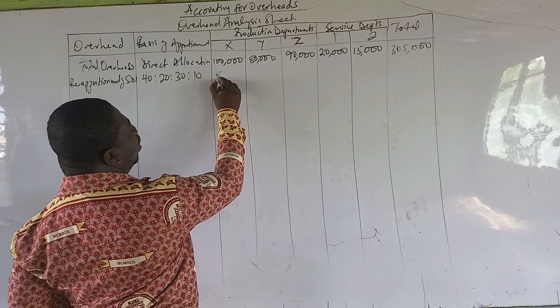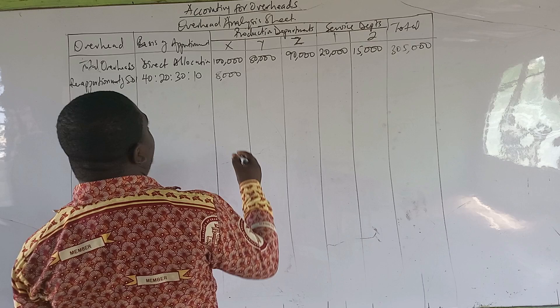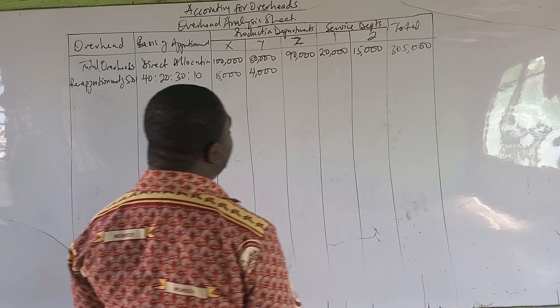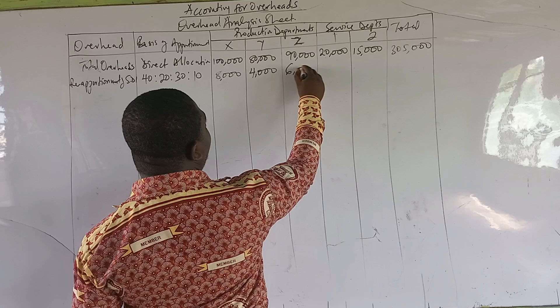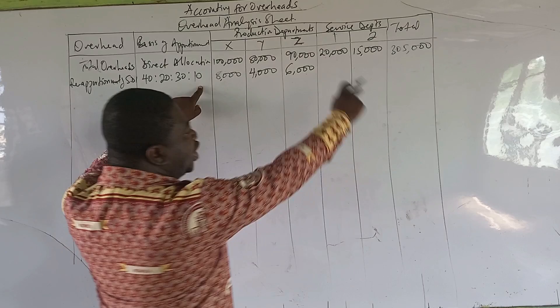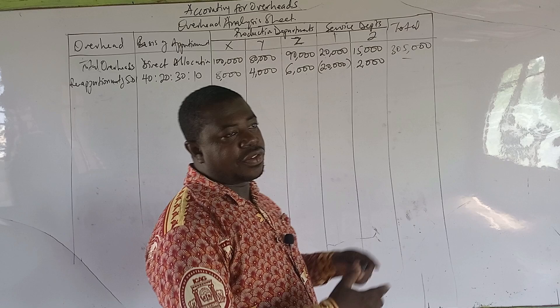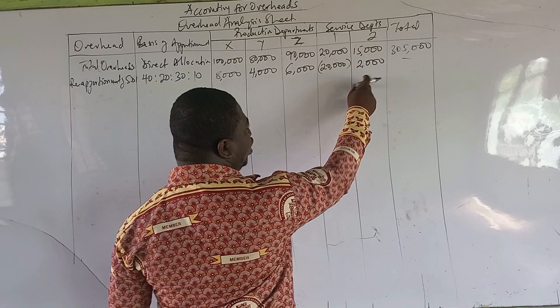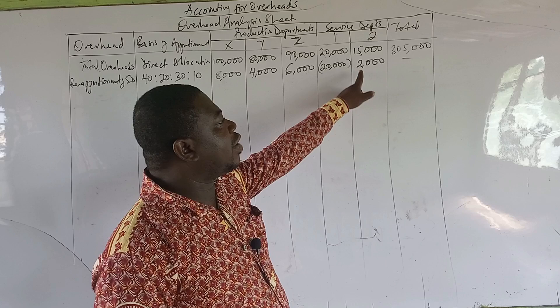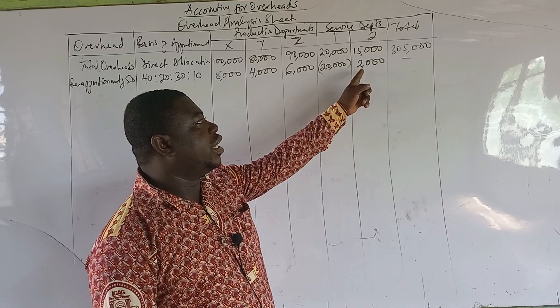For department Z, 30% of 20,000 gives us 6,000. For department 2, it gets 10% of 20,000, that is 2,000. Now when we come to reapportion service department 2, we need to find the new total: 15,000 plus the 2,000 that just came in is 17,000. We are reapportioning 17,000, not the original 15,000.